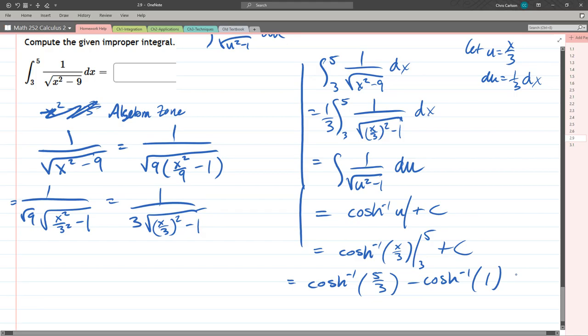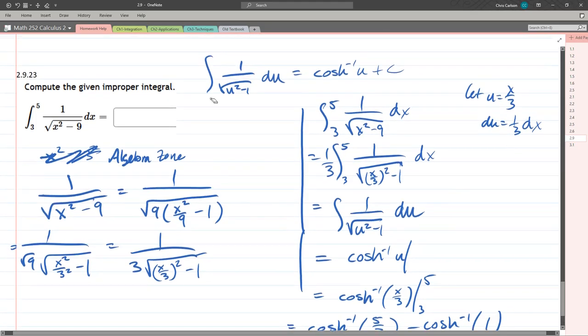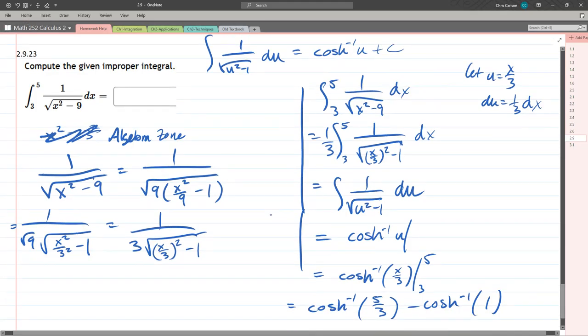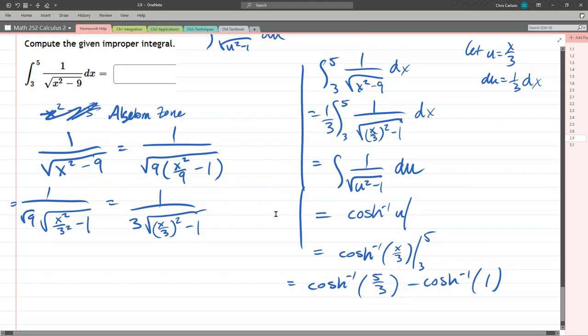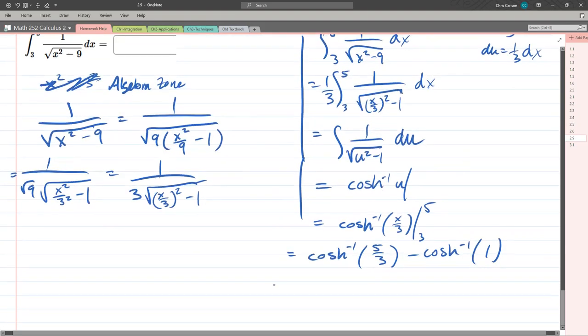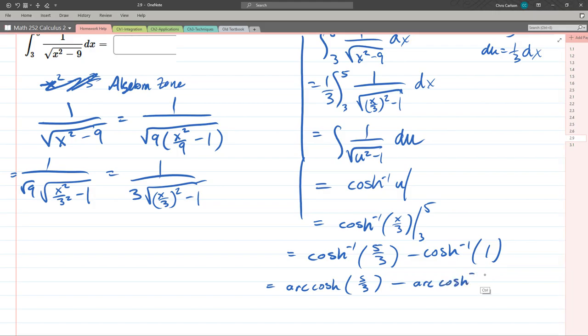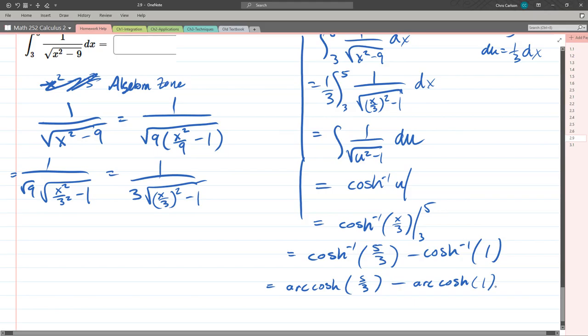So we have cosh hyperbolic inverse 5 thirds minus cos hyperbolic inverse 3 thirds. We do not have a plus c. And why is that? Because when you have endpoints, you don't have a plus c. I was just looking at what's at the top. But of course at the top, we didn't have endpoints in that generic formula up there. That's it. And that should be your answer. Sometimes cos hyperbolic inverse should be written as arc cos hyperbolic. So be ready to type in either of those. So either one is okay to write.